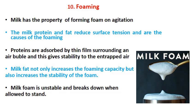Another property of milk is foaming. Milk has the property of forming foam on agitation or stirring. Milk protein and fat reduce the surface tension and are the causes of foaming. Proteins are absorbed by the thin film surrounding an air bubble, which gives stability to the entrapped air. Milk fat not only increases the foaming capacity but also increases the stability of the foam. However, milk foam is unstable and breaks down when allowed to stand.